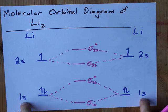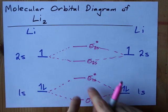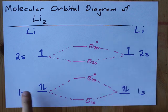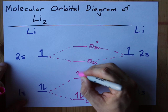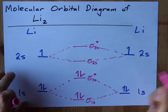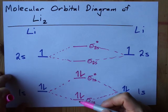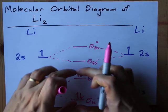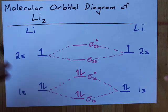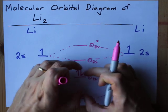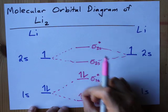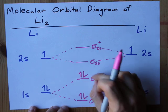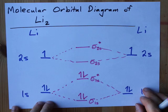Now among the 1s's that are combining to make these molecular orbitals, I have one, two, three, four electrons. Fill that. Those were actually inner-shell electrons, so it's probably no surprise that it's a wash down here — two electrons in bonding orbitals and two in anti-bonding orbitals.